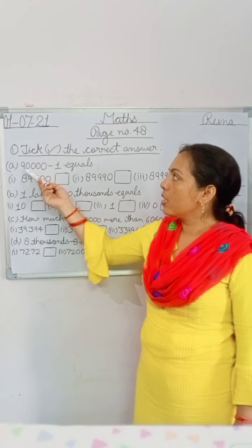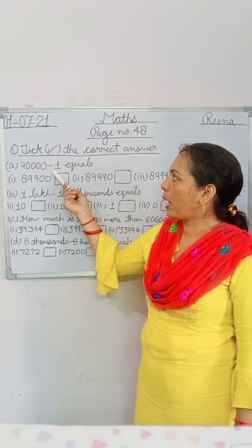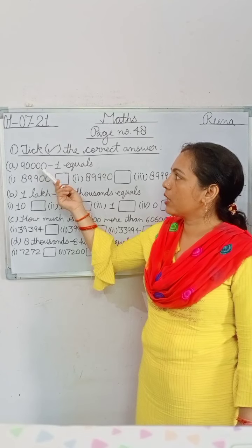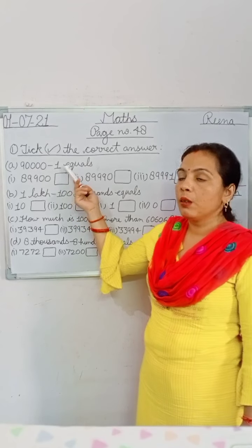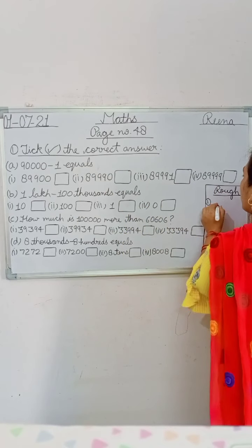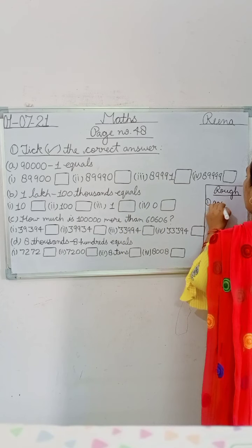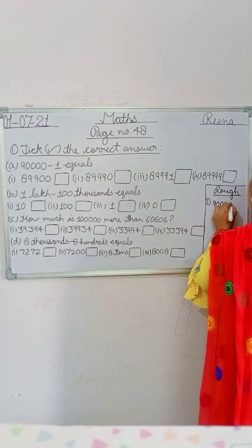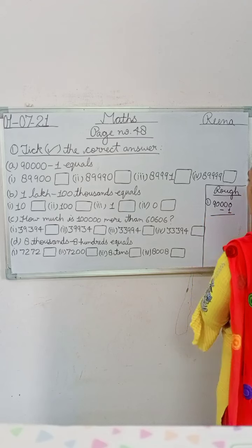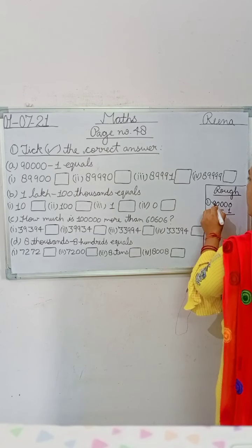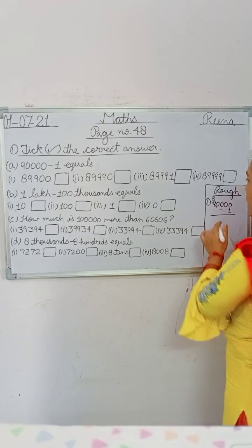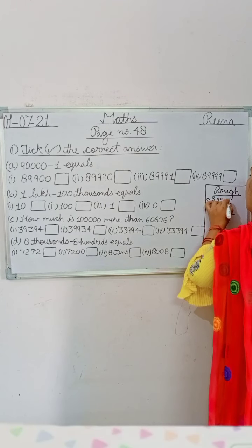In A part you have given 90,000 minus 1. Find the difference of both numbers — on your rough side write 90,000 minus 1. Zero minus 1 is impossible, so regrouping starts: cut 9 and write it, and all the zeros become 9, 9, 9, 9. So the answer is 89,999.